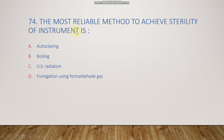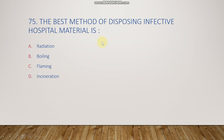The next question: the most reliable method to achieve sterility of instruments is autoclaving, boiling, UV radiation, or fumigation using formaldehyde gas? The right answer is option A, autoclaving.